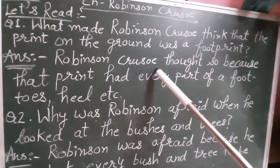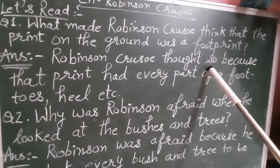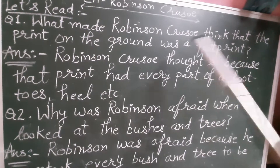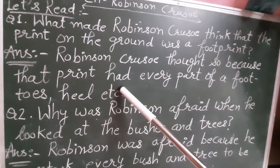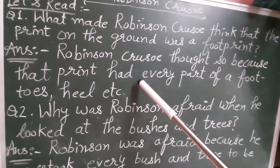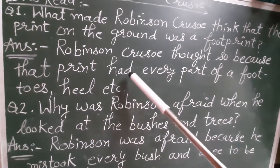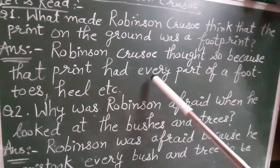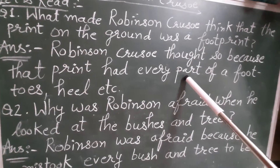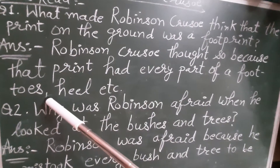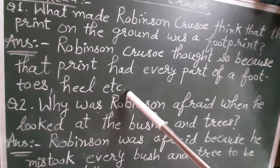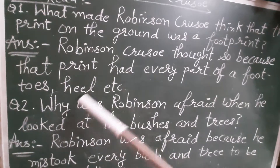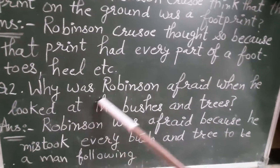Robinson Crusoe thought — dekho answer kya likhenge — Robinson Crusoe thought, because that print had every part of a foot. Us print mein jo pair hota uska hara ek bhaag tha, jaise ki toes — paon ki ungliyan — heel matlab aadi, aur uske doosre bhaag bhi thay, et cetera, isliye usne ye socha.